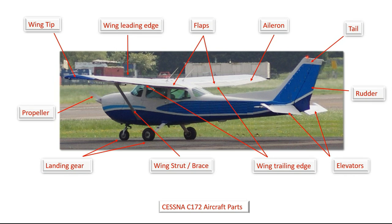Finally, we're going to look at the landing gear. On the Cessna C172 we've got what they call a tricycle landing gear, meaning there's one wheel at the front and two wheels at the back. These support the aircraft while it's on the ground.